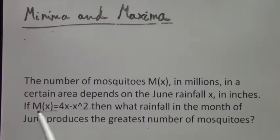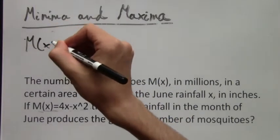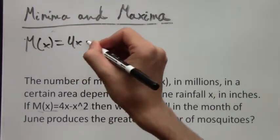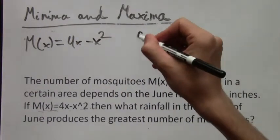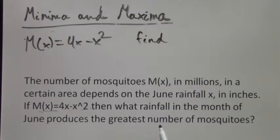So here's this formula. Let's write it down. M(x) equals 4x minus x squared. And what are we looking for? We're looking for what rainfall, what x, gives the greatest number of mosquitoes?